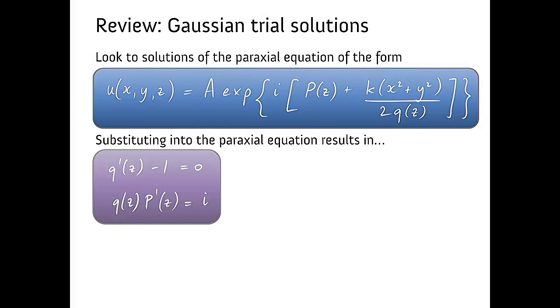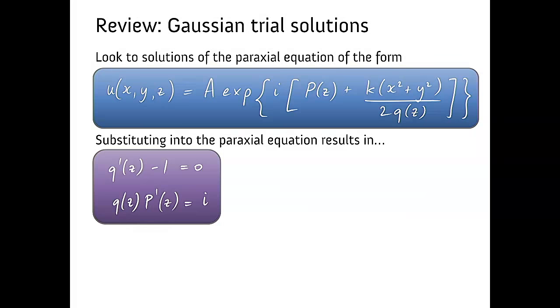In doing so, we substituted that into the paraxial equation and got these two simple equations, no longer complicated DEs with multiple spatial derivatives. Now just DEs in Z for these two parameters Q, the complex radius of curvature, and P, some mystery function we're going to look at today.